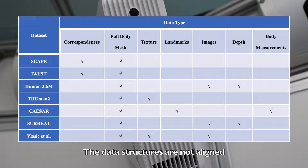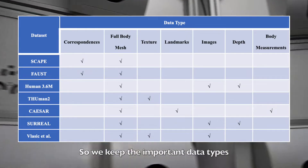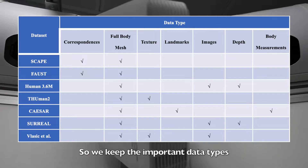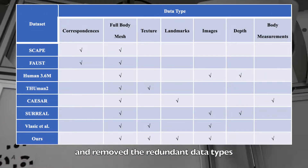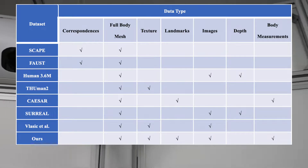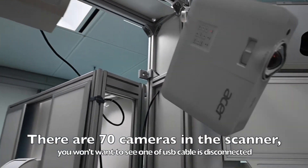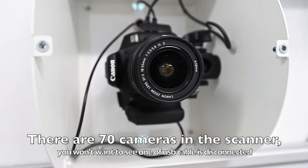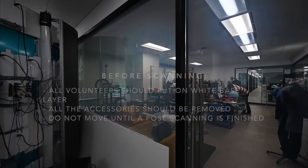There are different data structures from more well-known databases, so we hope to create a universal standard for human datasets. As most public datasets are built from Europe and other countries, we want to collect data from Asians for different research purposes, such as costume design or 3D geometry on the human body.